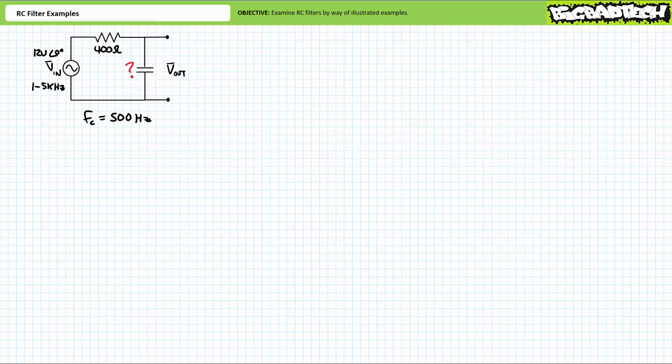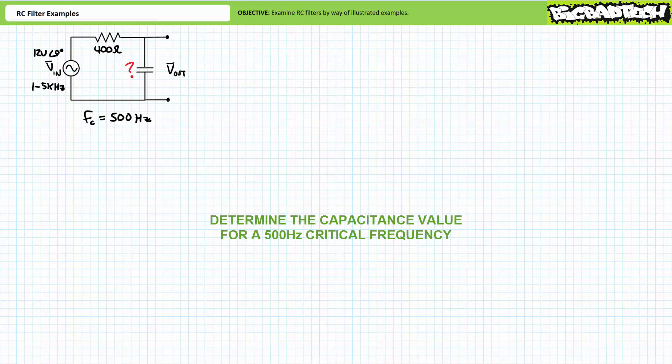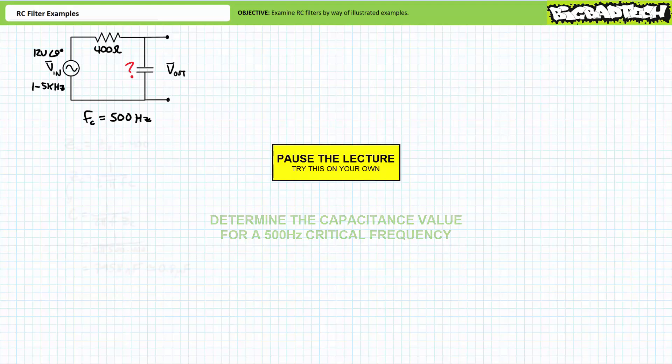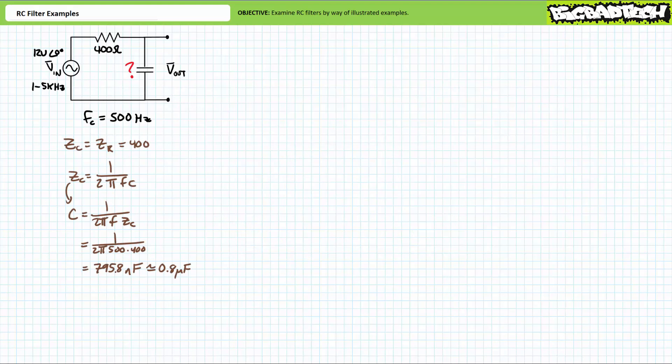Let's try a low-pass filter illustrated example at a rapid fire pace, including an interesting two-part challenge. Challenge one: given a series circuit with Vin a 12 volt source that can be varied up to 5 kilohertz and a 400 ohm resistor, determine the capacitance level necessary for a 500 hertz critical frequency. This will take a degree of algebraic manipulation. Algebraic manipulation of the capacitive impedance formula suggests a 795.8 nanofarad, or approximately 0.8 microfarad, capacitor should do the trick.